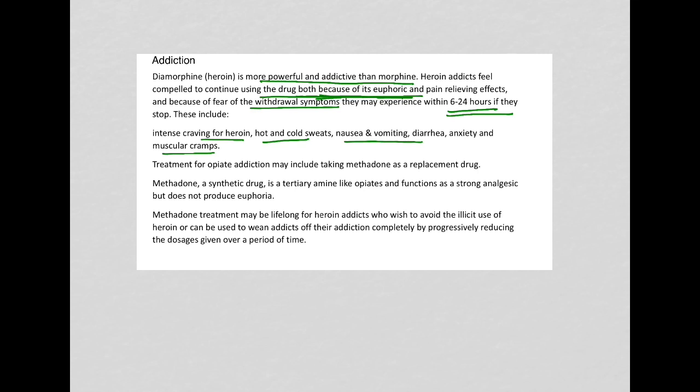Treatment for opiate addiction may include using methadone as a replacement drug. Methadone is a synthetic drug. It also has the active part of the opiates and it functions as a strong analgesic, but it does not produce euphoria. It just calms down the withdrawal symptoms, but it doesn't cause that feel-good effect. The addict can gradually reduce the amount of methadone that they are taking and in doing so, they can also manage the withdrawal symptoms. With time, they can wean the addiction completely.